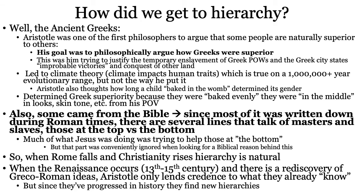This led Aristotle to something called climate theory. He argued that climate impacted human traits — that if you were in regions that were too hot, you were 'baked too much,' and if too cold, not baked evenly. He actually said the same thing about gender, arguing a male child was baked in the womb appropriately while a female child was over- or under-baked. He determined the Greeks were superior because they were 'baked evenly,' and that was the original point of view for hierarchy in Western civilization.